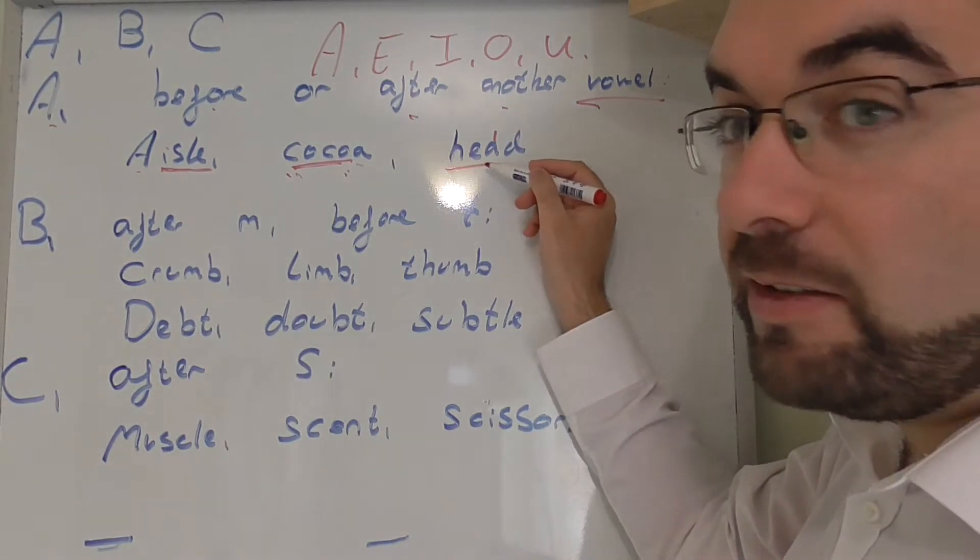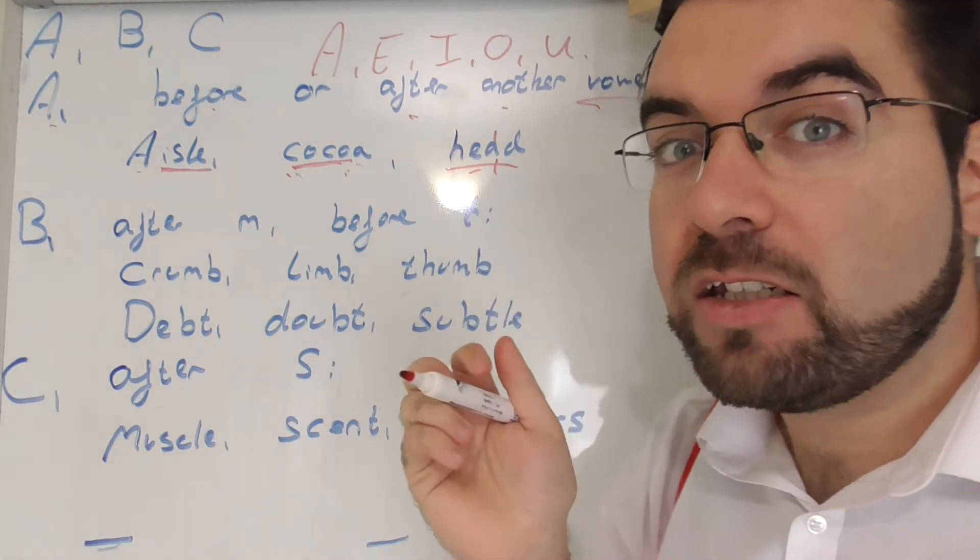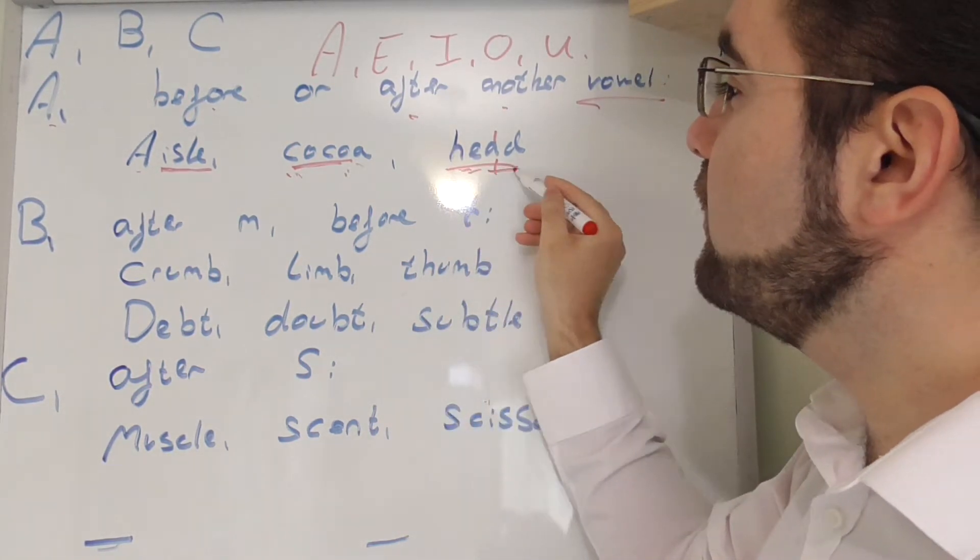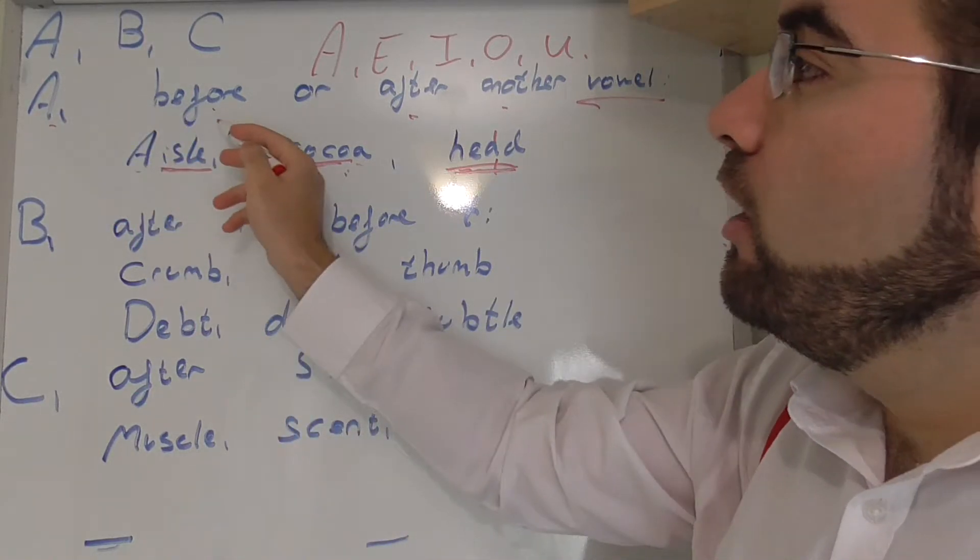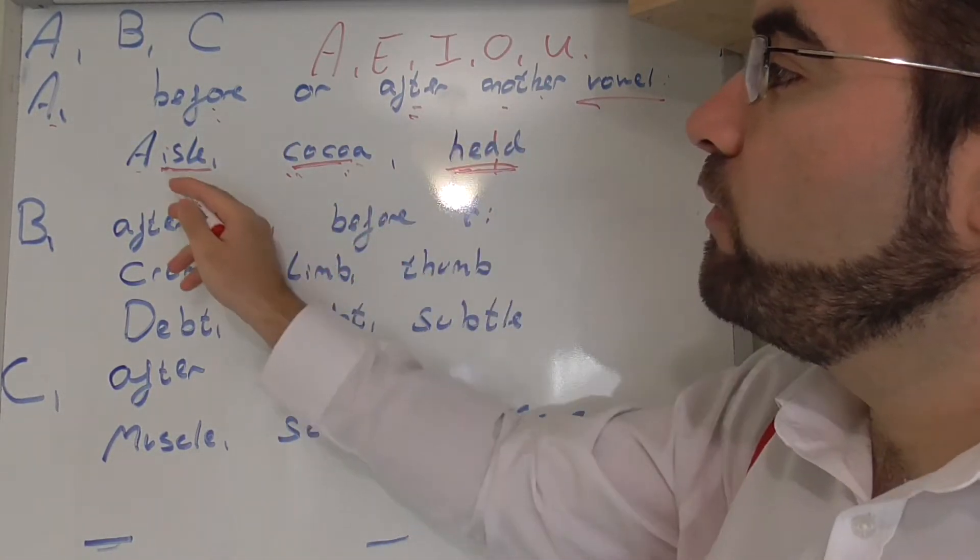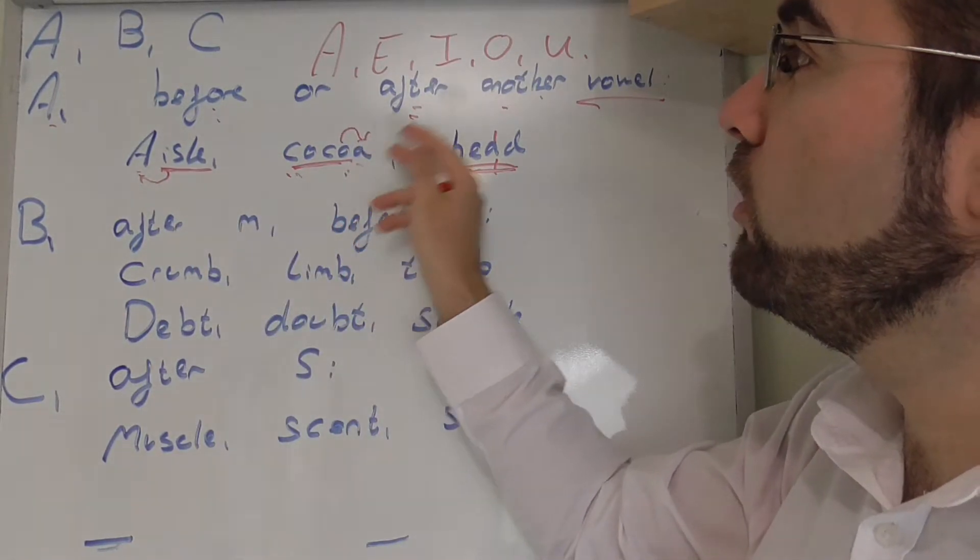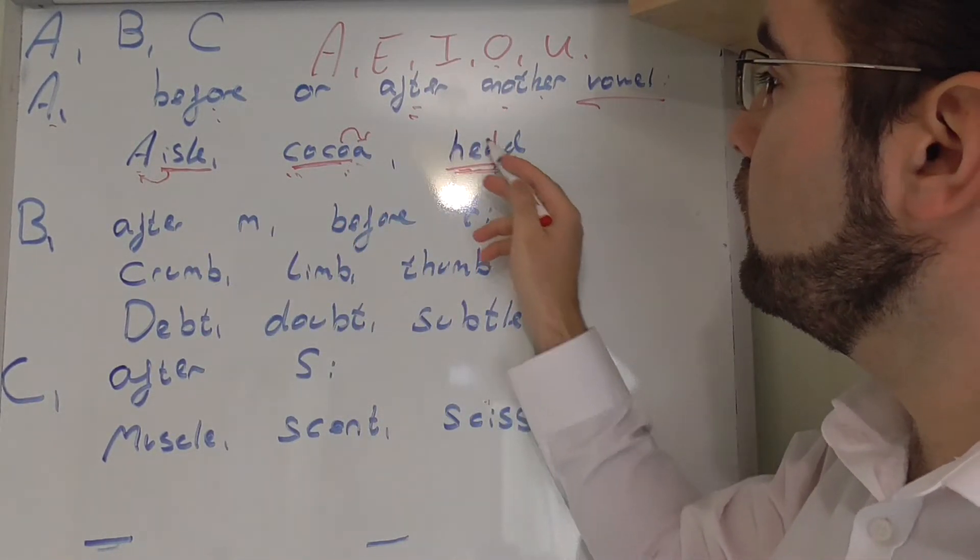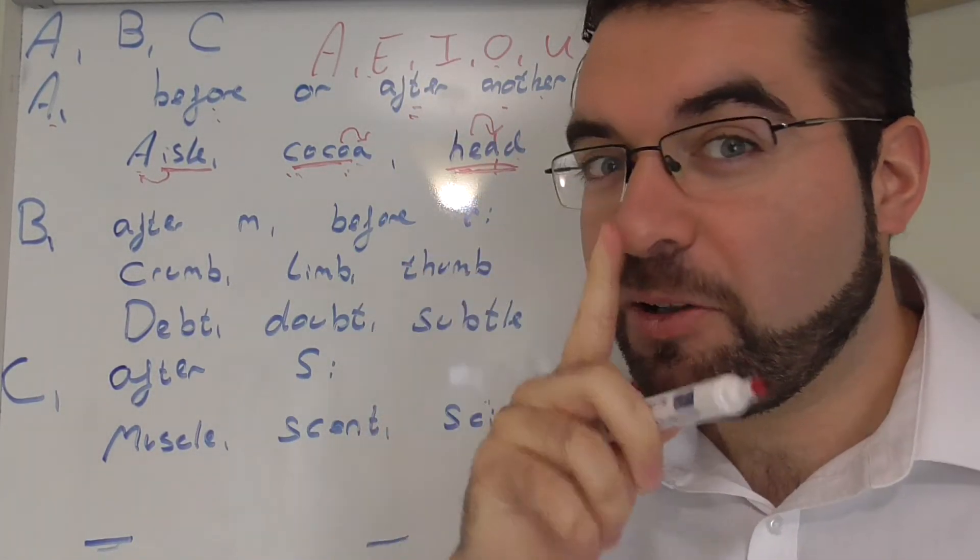How cool is that? And head. He had. No, he had. Head. The A, before or after another vowel. So, before the I, after the O, and after the E. Yes, head. How cool is that?